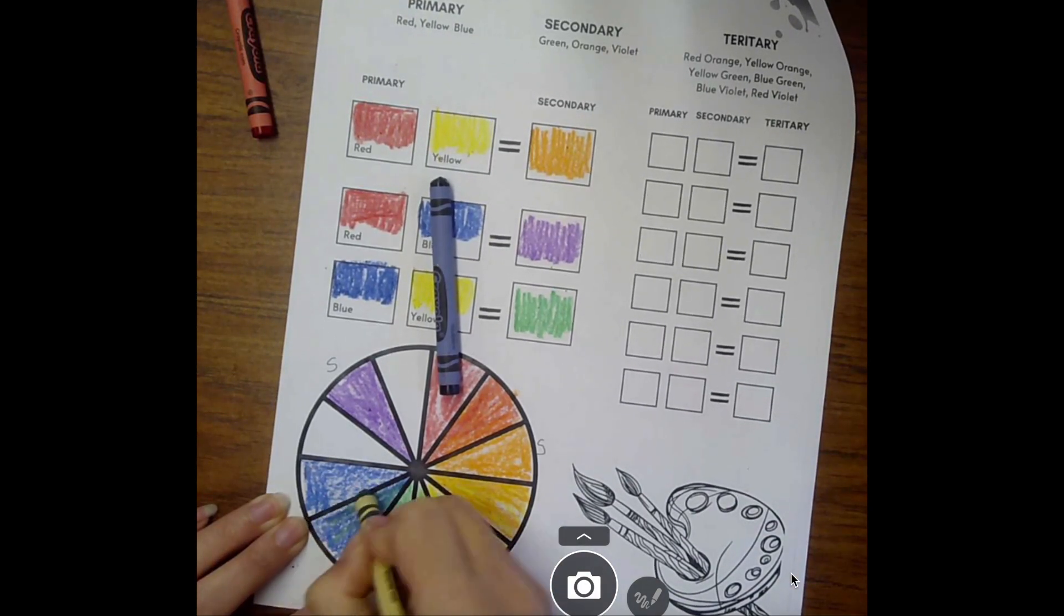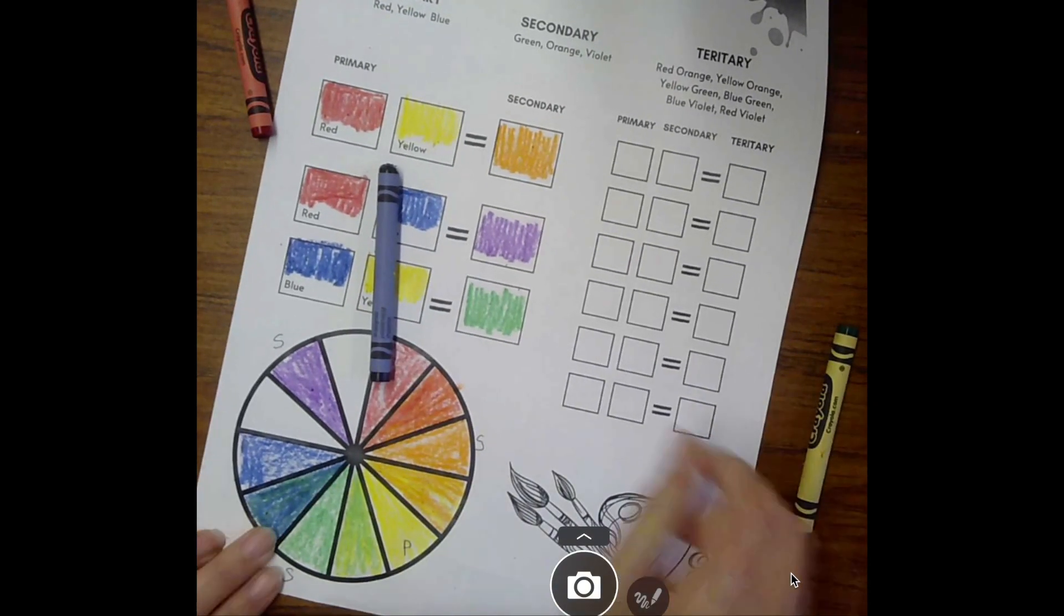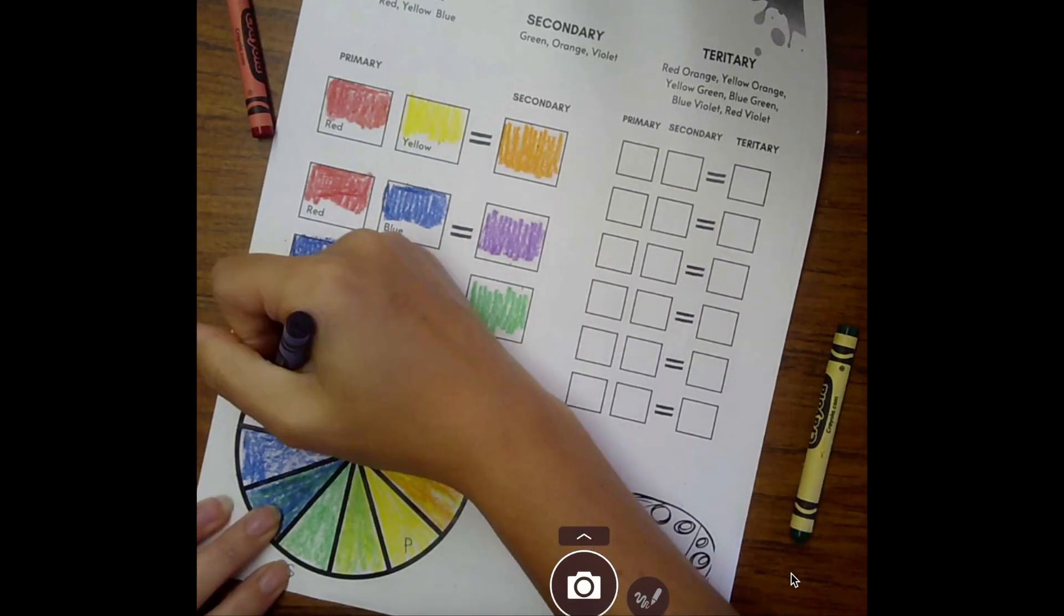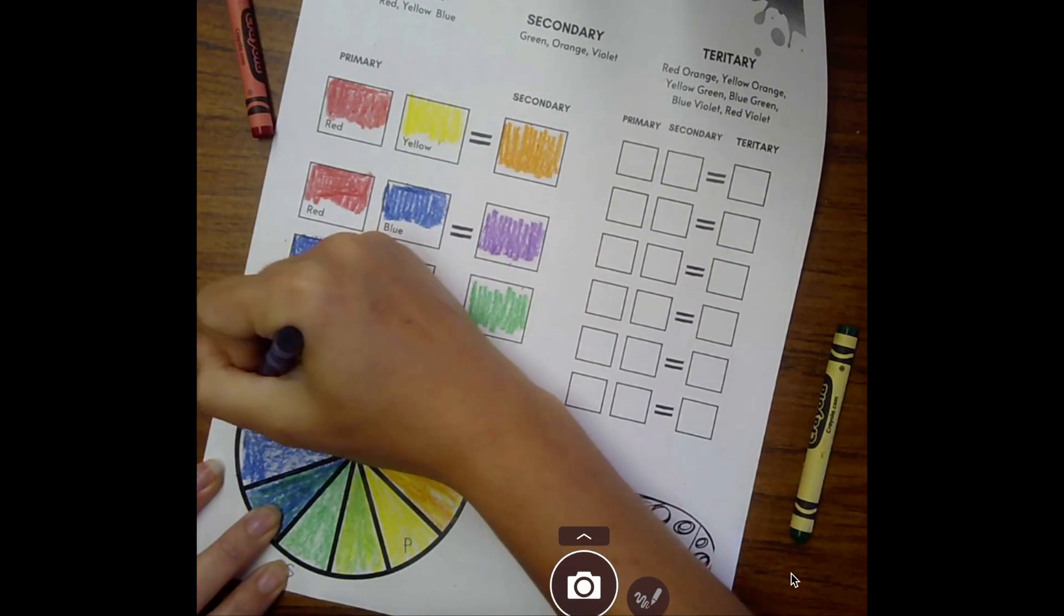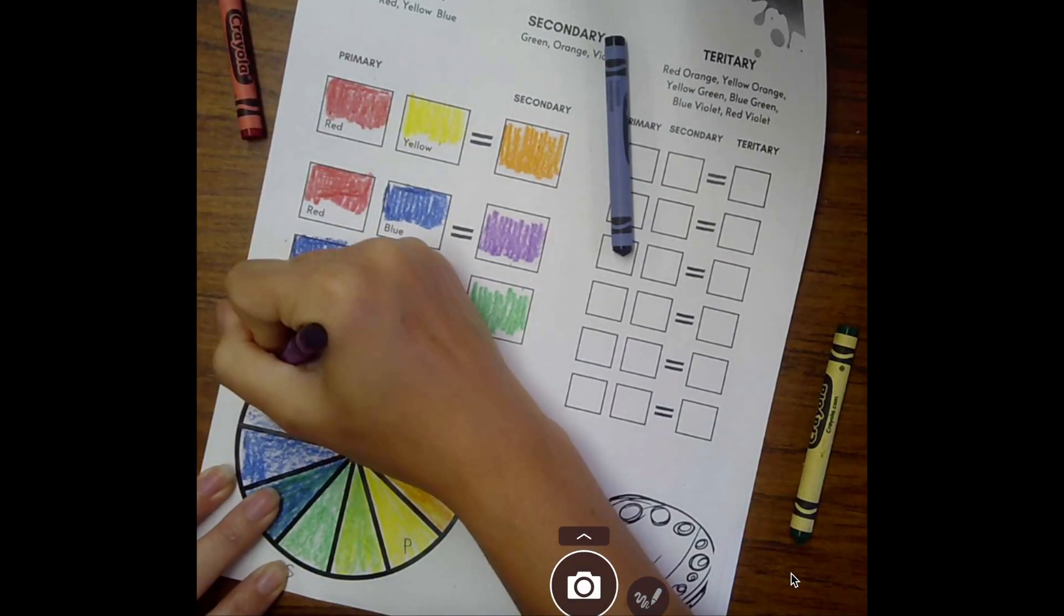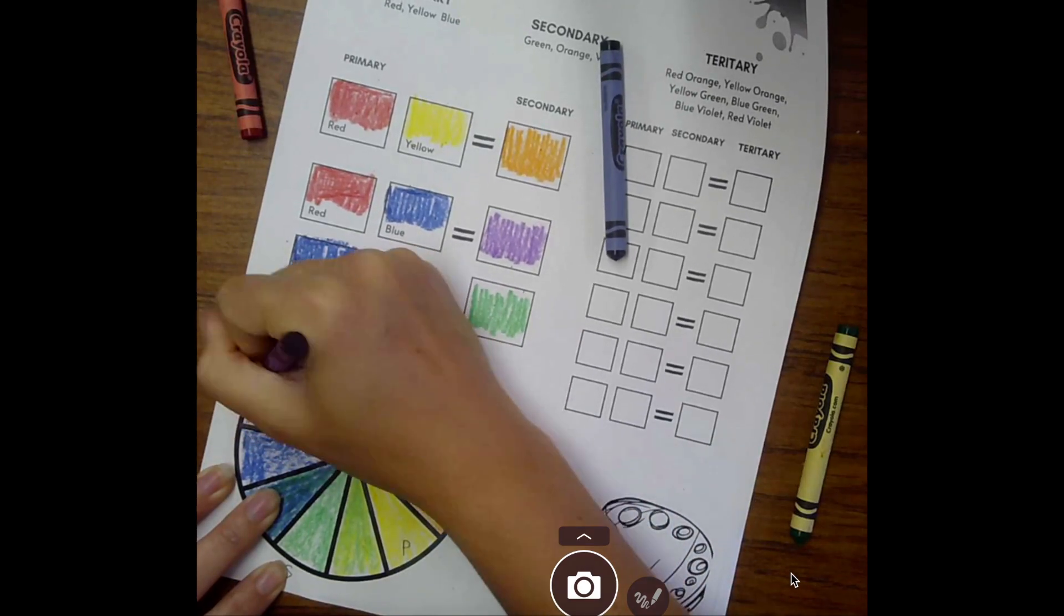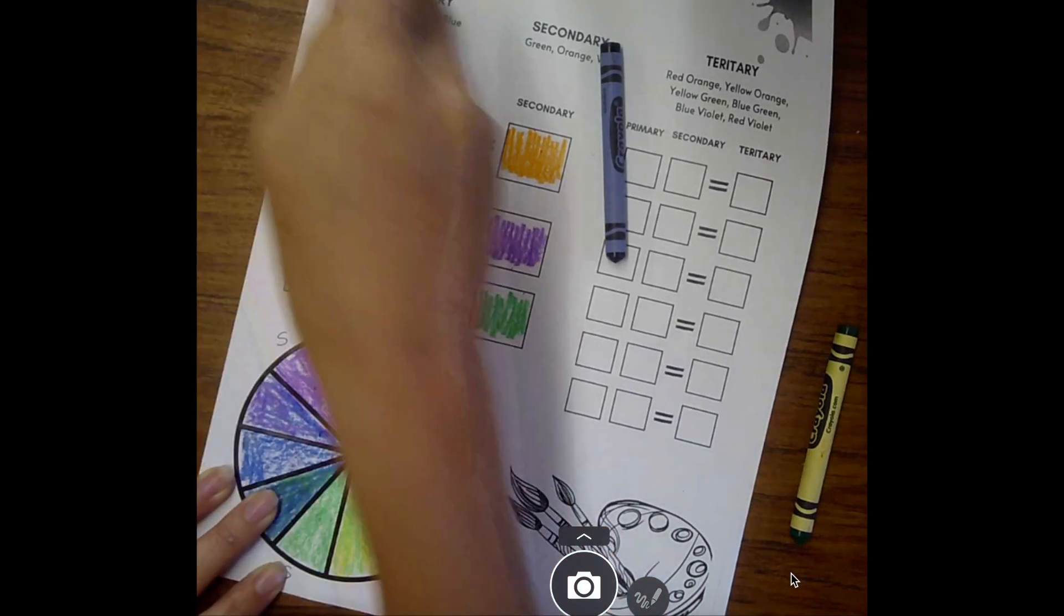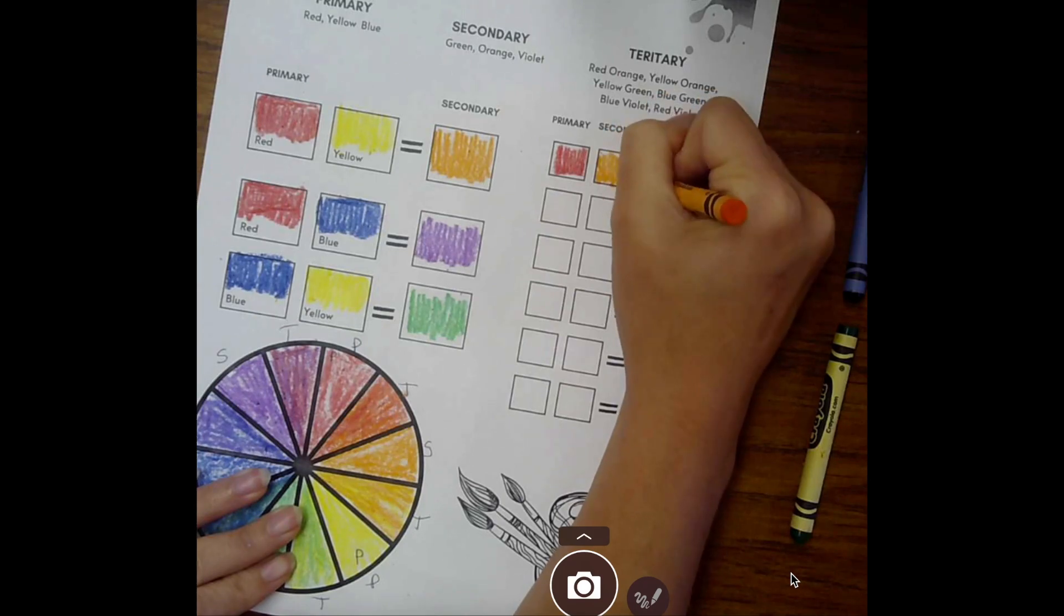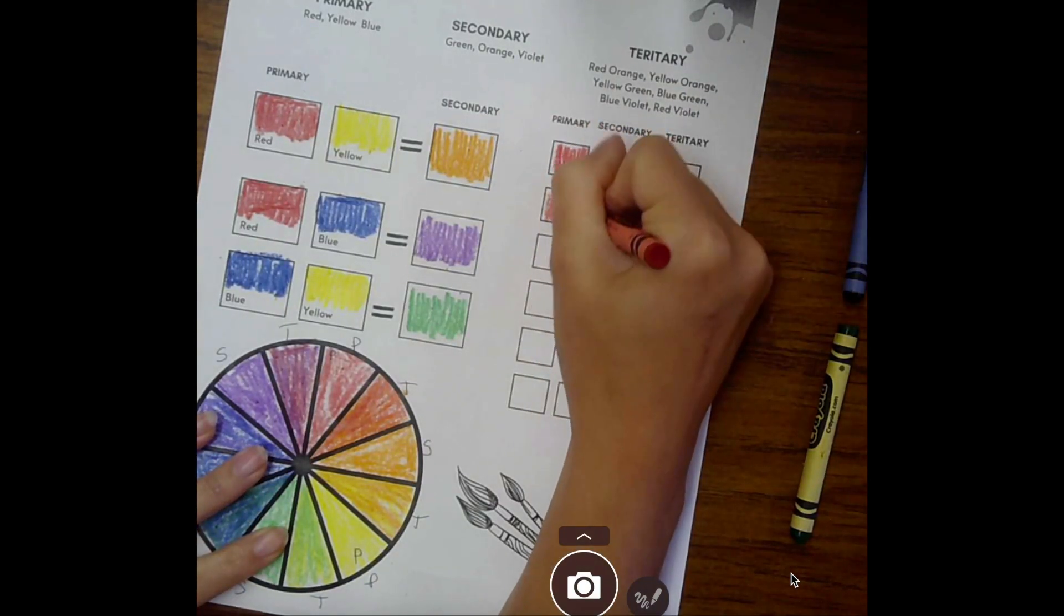Next section will be blue-violet, so I layer blue and violet together. And then the last section will be a red-violet—so that will be red and violet together.